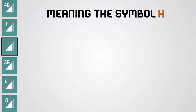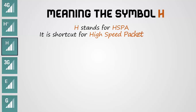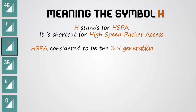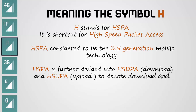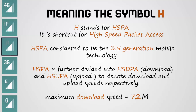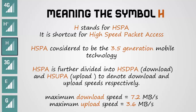Meaning of the symbol H: H stands for HSPA, which is short for High-Speed Packet Access. It is considered to be the 3.5 generation mobile technology. It is further divided into HSDPA for download and HSUPA for upload, to denote download and upload speeds respectively. Maximum download speed equals 7.2 megabytes per second. Maximum upload speed equals 3.6 megabytes per second.